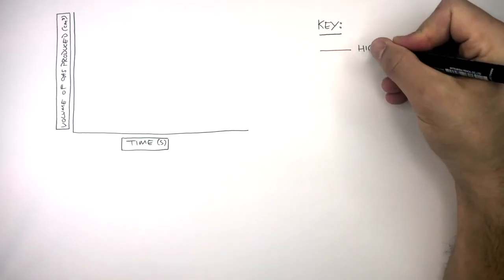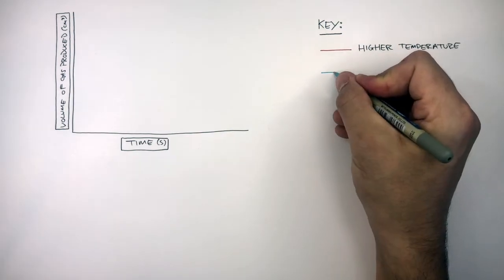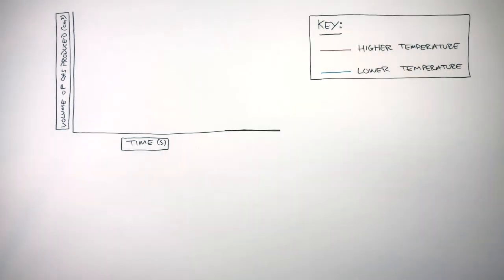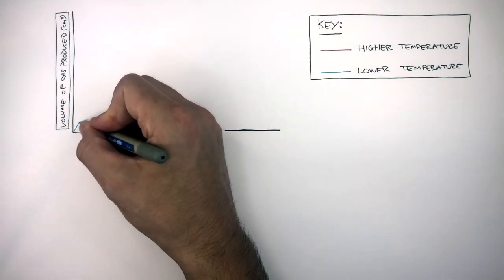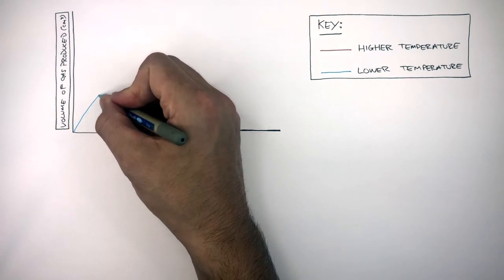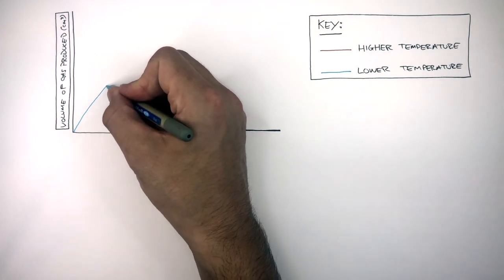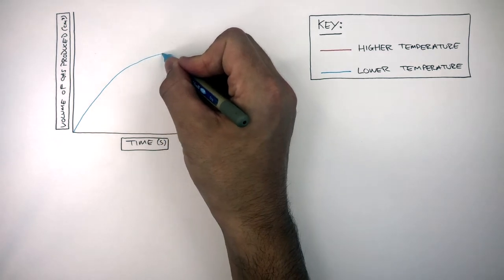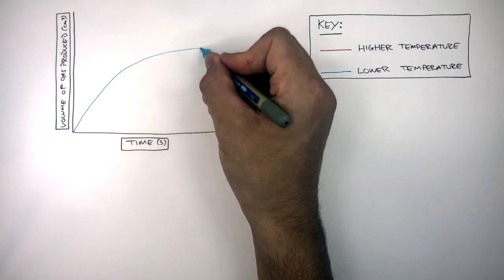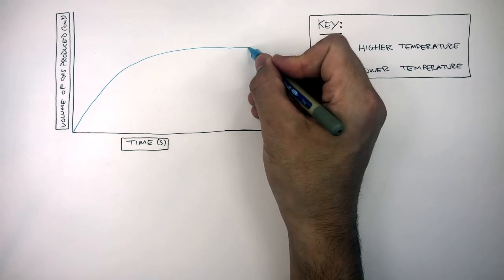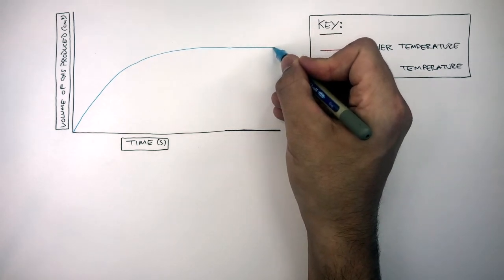The red line represents a higher temperature and the blue line represents a lower temperature. For the lower temperature, initially the curve is not as steep, which means the rate of reaction is slower. As the reaction progresses, the rate slows down as the curve becomes less steep. Eventually, with time, the curve becomes flat or horizontal, which means the reaction has stopped.